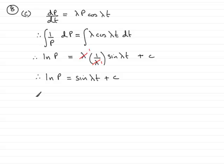Now we need to work out what c is. In order to do that, we can put in the conditions that we're told, and that is that initially, when t = 0, p = p₀.